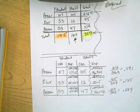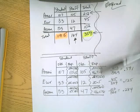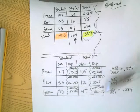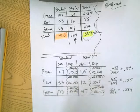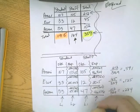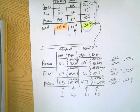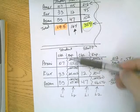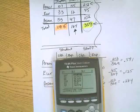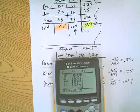Now I need to run the test. I can't put these in L1, L2, L3, and L4 separately — instead, I'm collapsing everything into two lists. The observed values go into L1 and the expected values go into L2. Take the time to enter all those numbers, then run the chi-square goodness of fit test.